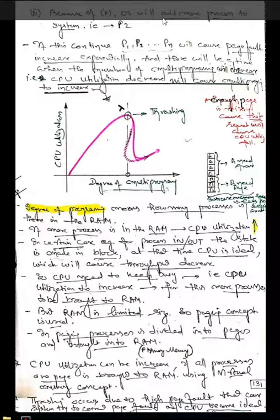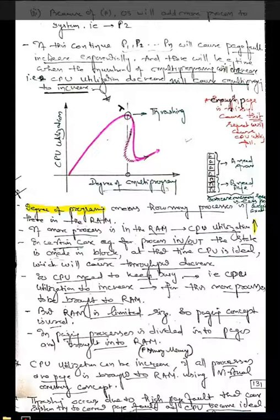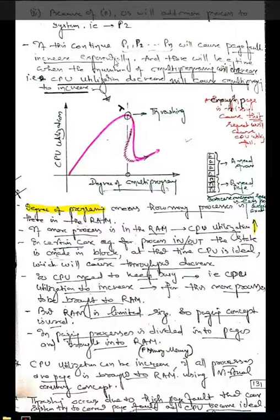When more processes are in the system, the size of files increases and the CPU search takes longer. The processes P1, P2, through PN will all cause page faults. As the number of processes increases, page faults increase exponentially, and there will come a point where multiprogramming decreases and CPU utilization decreases as well.